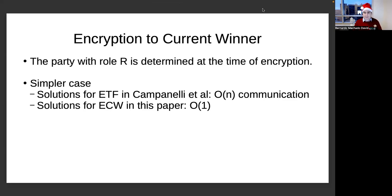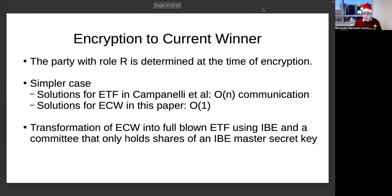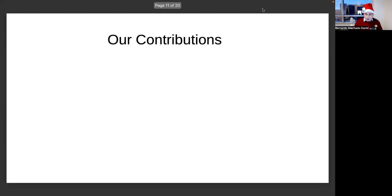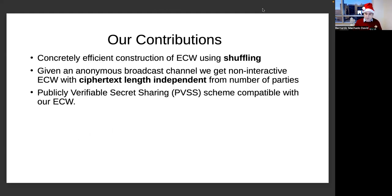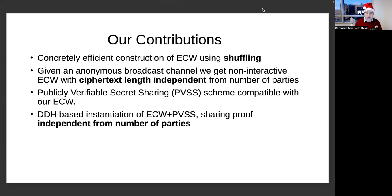Our shuffling-based approach gives us constant-size ciphertexts, as opposed to ciphertexts with size proportional to the total number of parties. We then use the idea from the ETF paper to show that we can take this Encryption to the Current Winner and realize the full YOSO MPC use case, or even get full-blown Encryption to the Future towards parties who might be elected far in the future, by using IBE and a committee with communication independent from the number or length of messages. Our contributions include this construction of ECW using shuffling, as well as a publicly verifiable secret sharing scheme compatible with our ECW scheme, with proofs that a given set of shares has been correctly generated that are of size independent from the number of parties, giving us a very efficient implementation of PVSS.